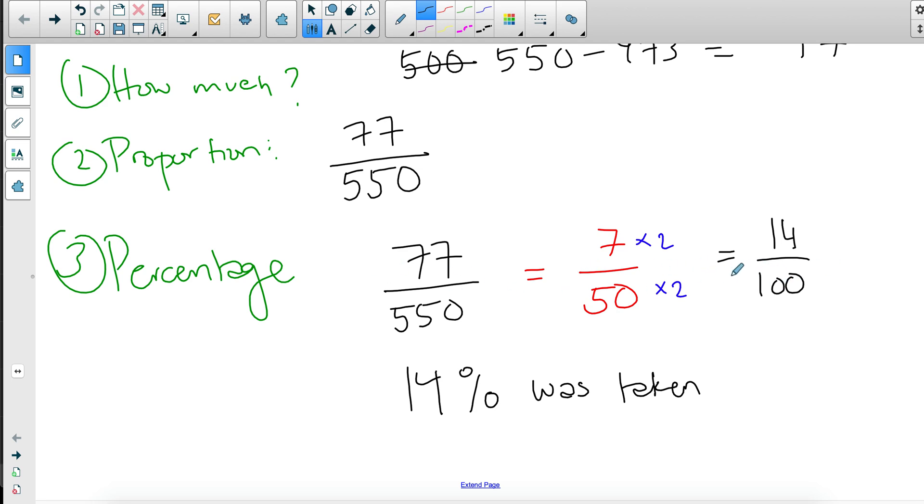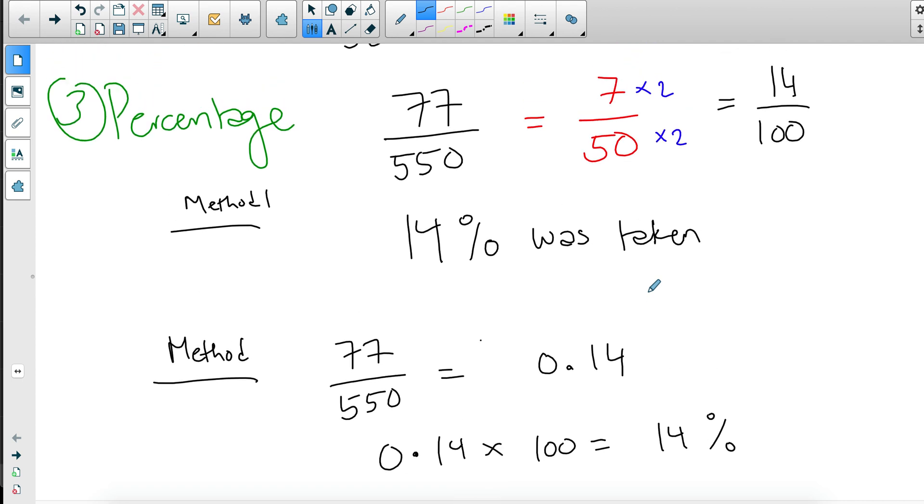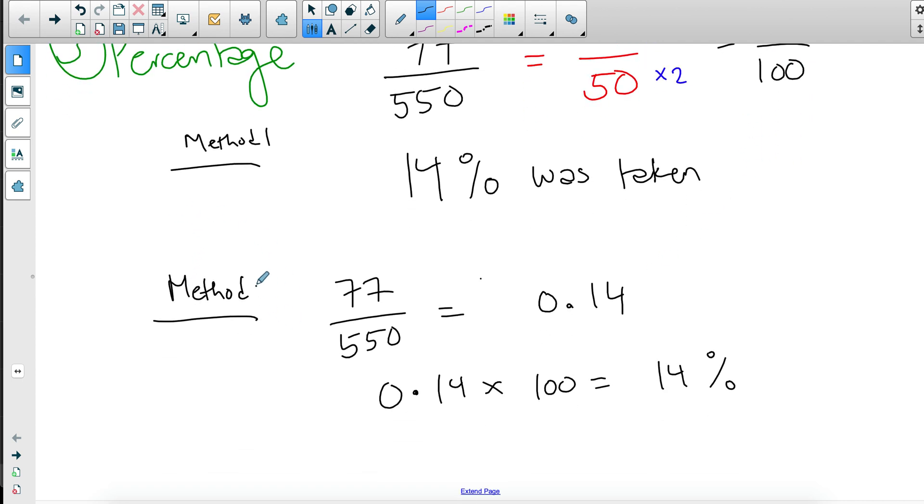So again, you can use this method if you can change the denominator to 100 or you can just use the method of changing this to a decimal, which should give you 0.14 and then multiplying it by 100, which will give you 14%. So I can illustrate the last two methods. So this was method one, method two, just combining everything we've done above. We could have gone with 77 over 550, which would have given us 0.14. And then we take the 0.14 and then multiply by 100. And that would have given us 14. And that would be represented as a percentage. Or just take the fraction there. So that's the method two.